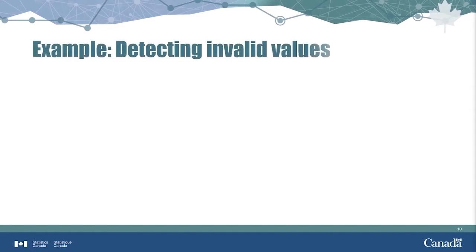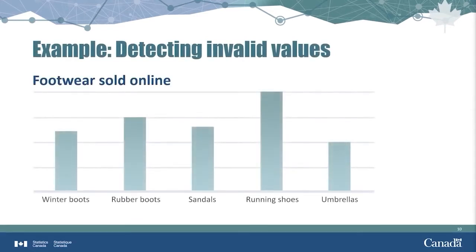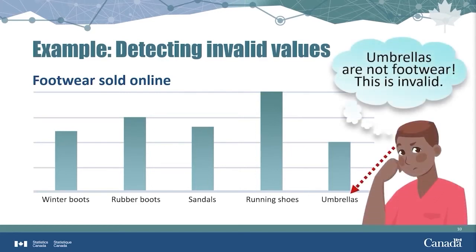In this made-up example, we use a bar chart — a very simple data visualization method — to look at the frequency distribution of the types of footwear sold online. The heights of the bars look to be all within the same range. However, we notice on the horizontal axis that one of the bars is for umbrellas. You can't wear umbrellas on your feet — this is invalid. Further investigation is needed to figure out if the data in the bar actually represents some other type of footwear and the label 'umbrella' was erroneously assigned, or if somehow the count of umbrellas got into the chart of footwear sales by accident.